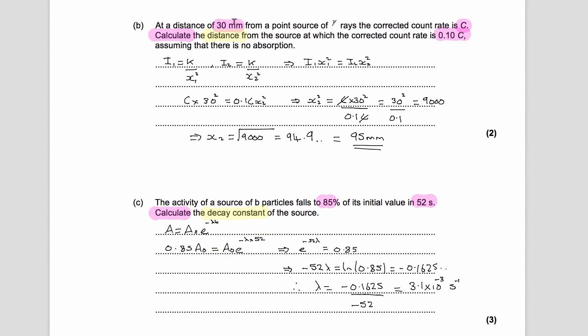In part B, we're told that we're now thinking about gamma rays. So as soon as we think about gamma rays and distances, which the question is asking us about, the first thing we need to think about is the inverse square law. We're told that at a distance of 30 millimeters from the source of gamma rays, the corrected count rate is C. We're asked to calculate the distance from the source at which the corrected count rate is 0.1 C, in other words 10% of what it was to start off with, assuming there's no absorption.